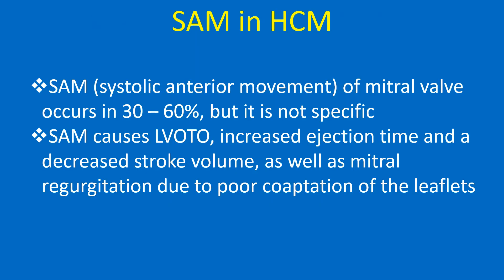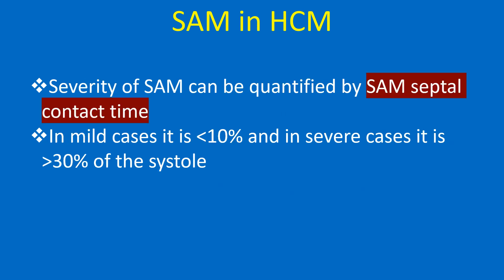SAM in HCM: Systolic anterior movement of the mitral valve occurs in 30 to 60% of cases, but it is not specific. SAM causes LVOTO, increased ejection time, and decreased stroke volume, as well as mitral regurgitation due to poor coaptation of the leaflets. Severity of SAM can be quantified by SAM-septal contact time: in mild cases it is less than 10% and in severe cases it is more than 30% of systole.